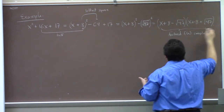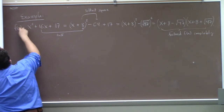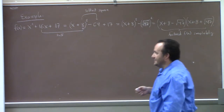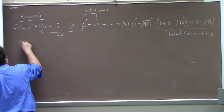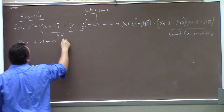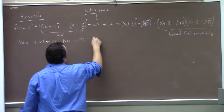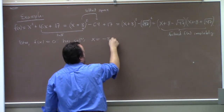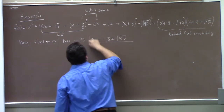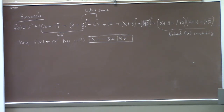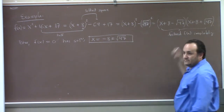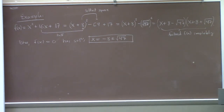We've now factored f(x) completely over the reals. And if we want to solve f(x) = 0, the solutions follow directly by the factor theorem: x = −8 ± √47. Remember that the factor and the zero correspond via a minus sign — I have (x + 8) in the factor, which is (x − (−8)), so the zero is x = −8.